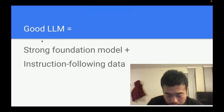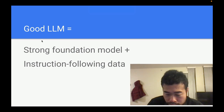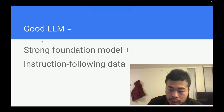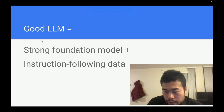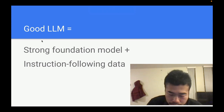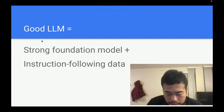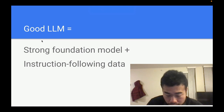So what is instruction following data? It's where you give the model an instruction — for example, give me the best list of novels in 2020 — and the model gives you a response. Or: solve this programming problem for me, and the model gives you a response. Query and response — that's instruction following data. And this is so far the most effective way to train an instruction following model, like ChatGPT.